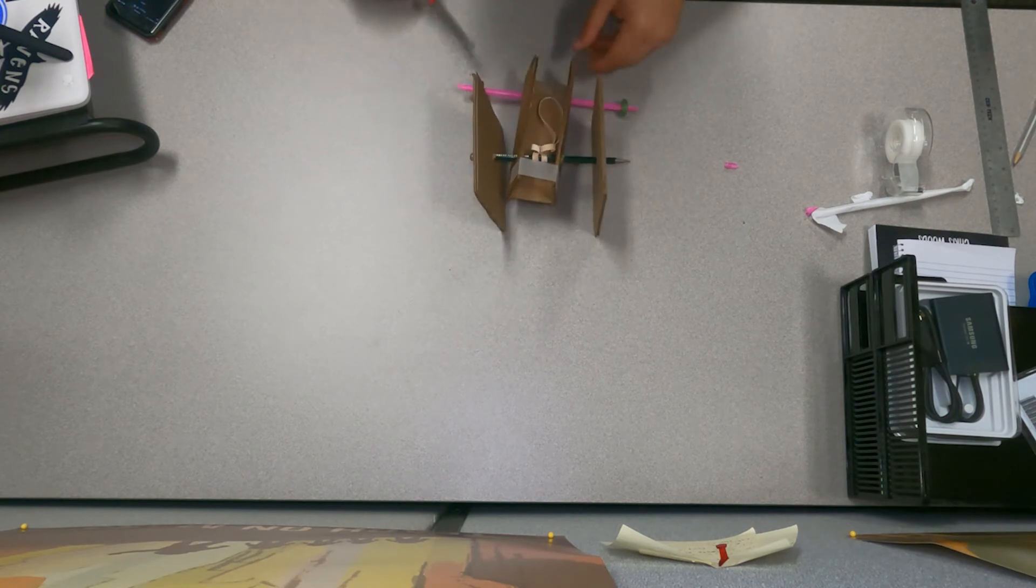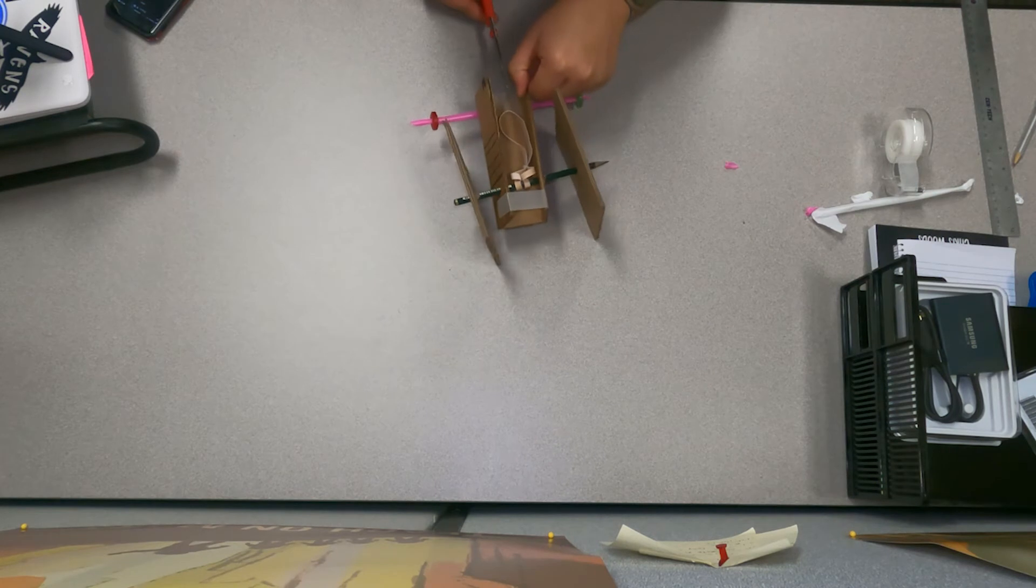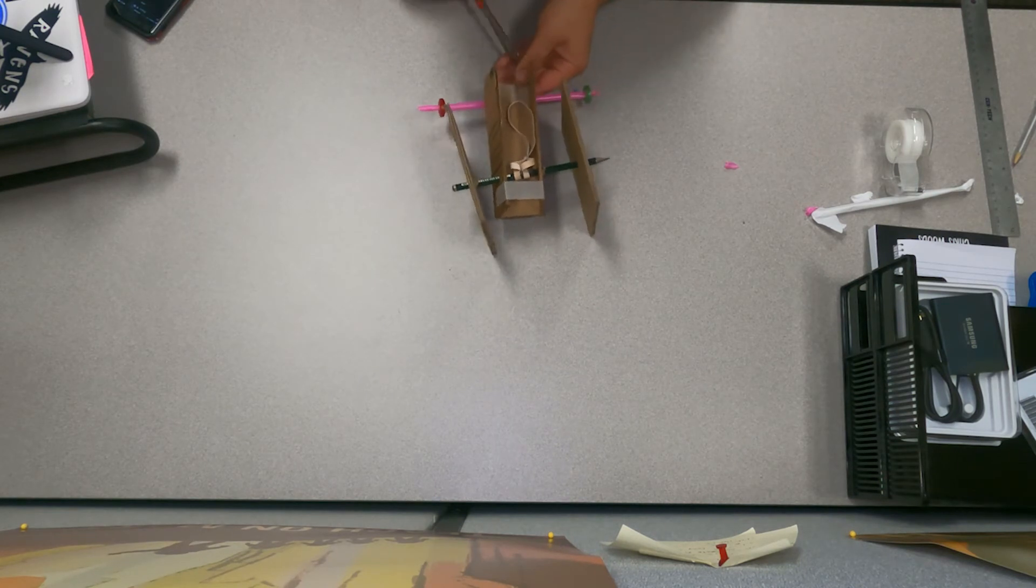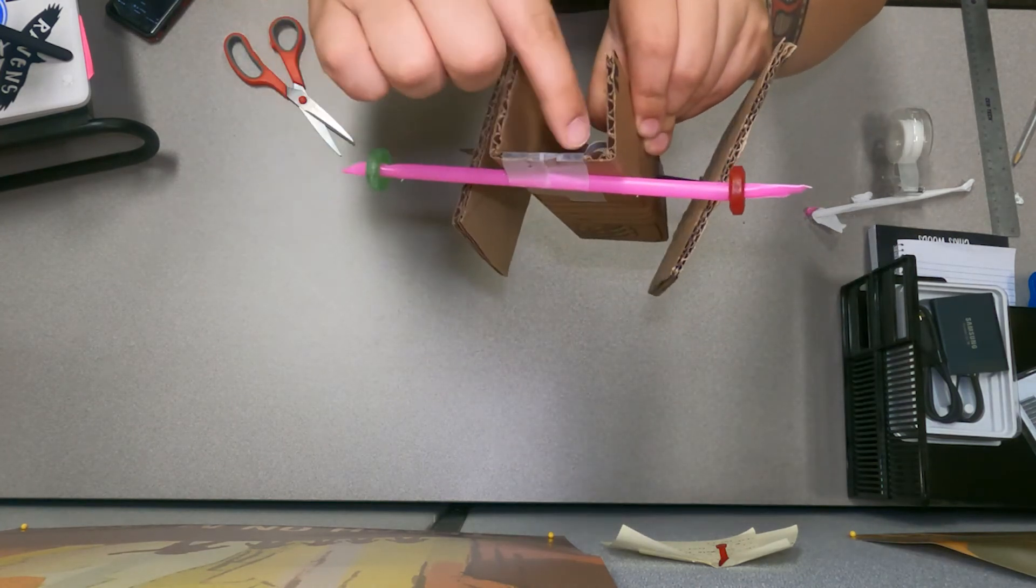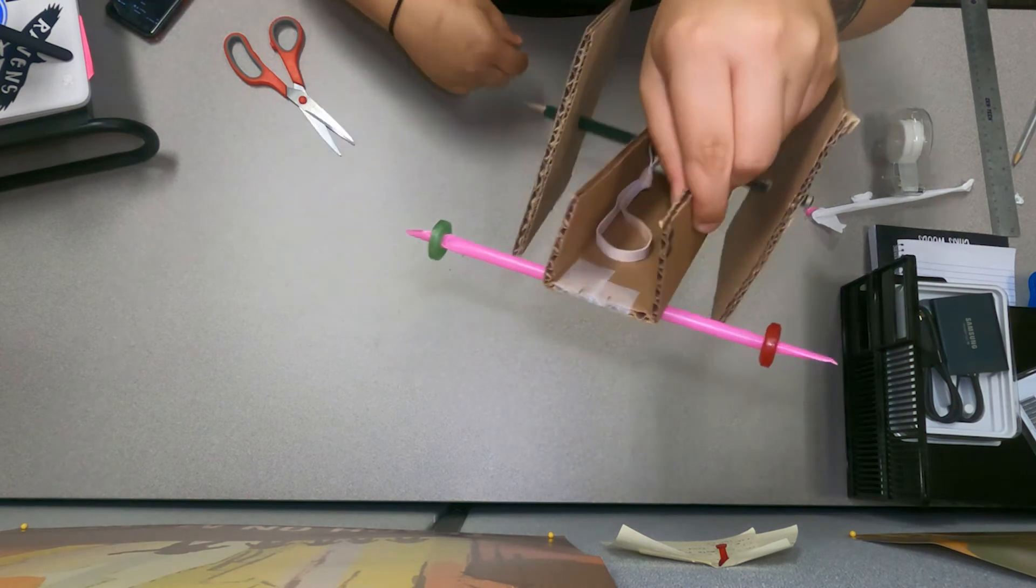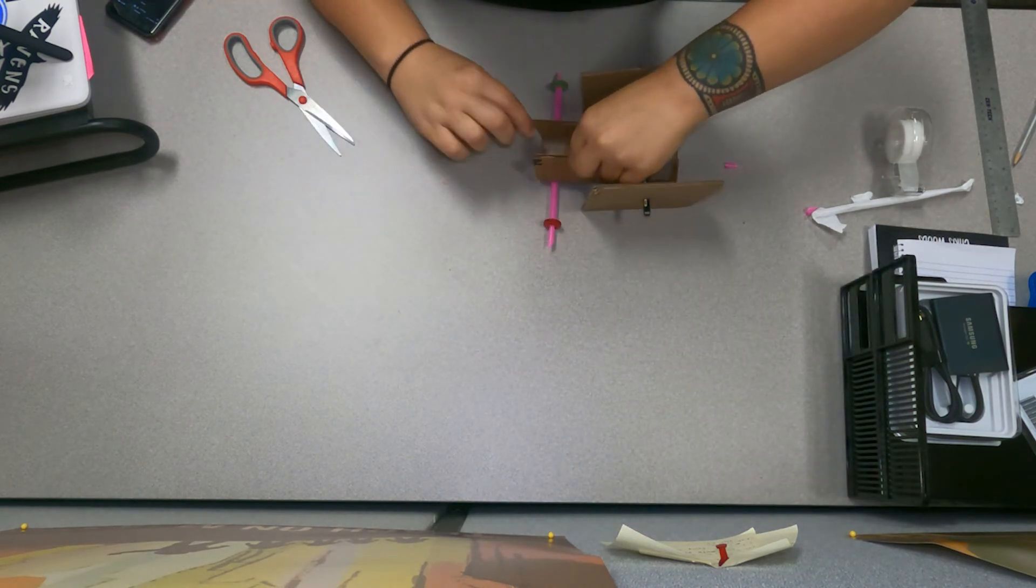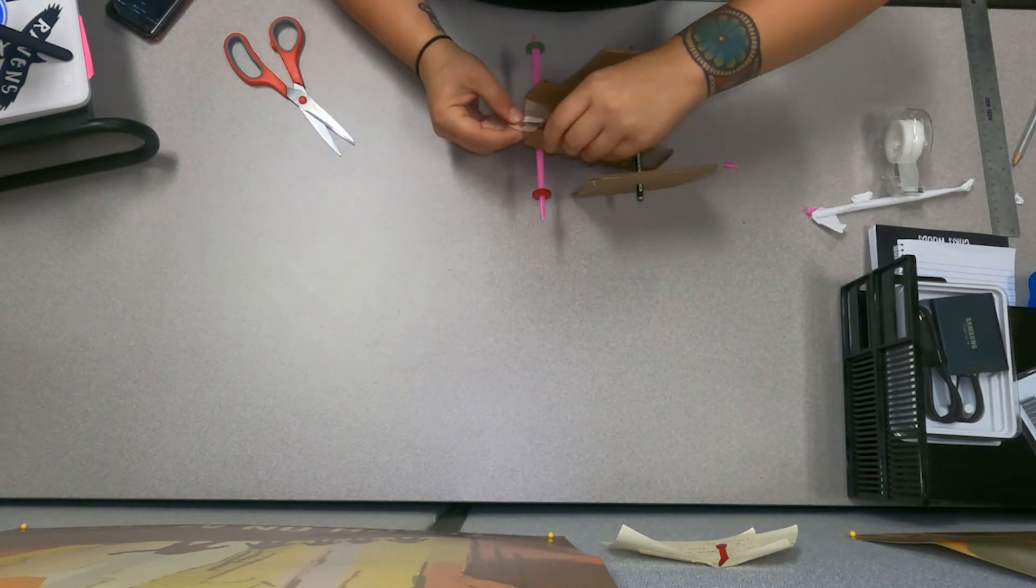So when you roll the wheels back the rubber band will have tension on it and when you let it go the wheels will spin and cause your rover to move. You can see there two little cuts into the cardboard is all you need. Let's try to attach it.